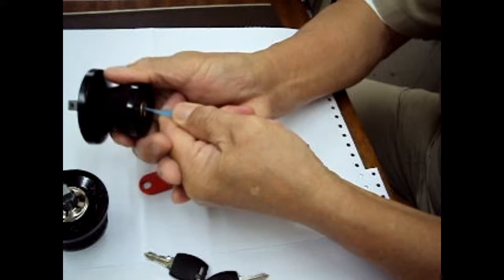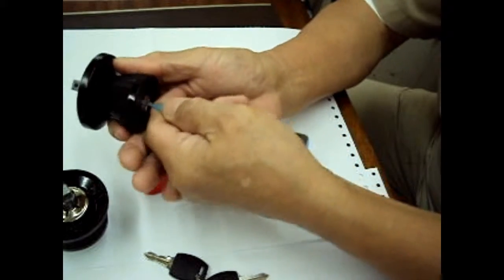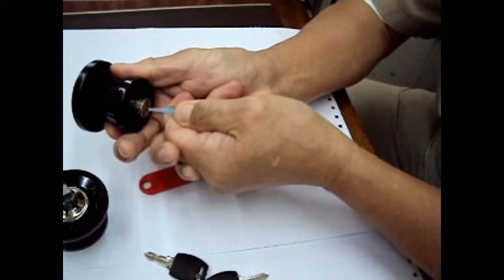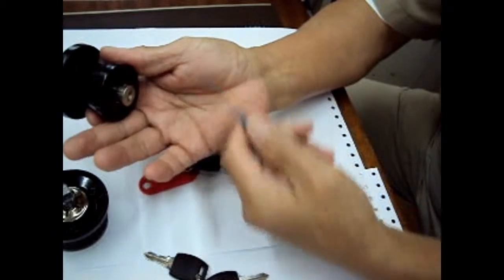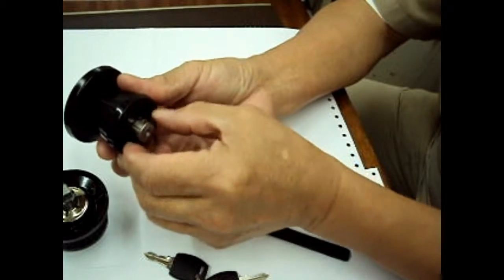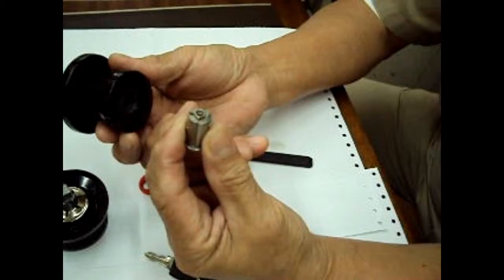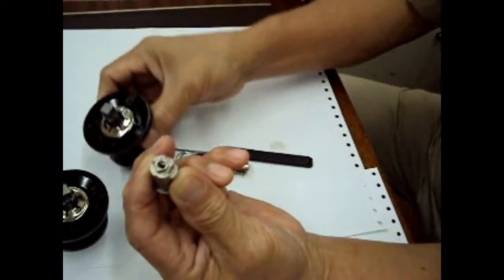Yeah, see? By taking out the core of the cabinet lock, you can rekey it. And also in this kind of lock...